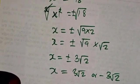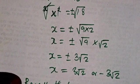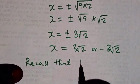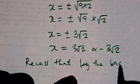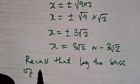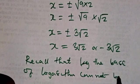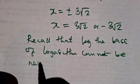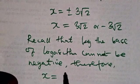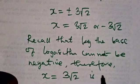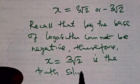The one we are picking is that in logarithm, recall that the base of a logarithm cannot be negative. Therefore, x equals 3 root 2 is the true solution.